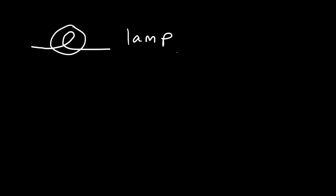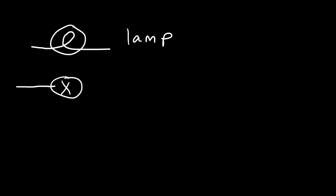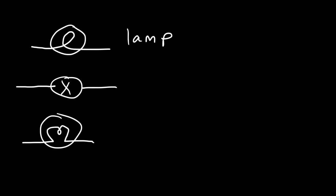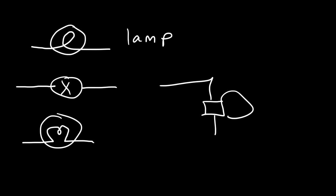Now let's talk about lamps and light bulbs. There are a lot of different ways to draw the symbol for a lamp or light bulb. One way is like this — that's a simple symbol for a light bulb. Another symbol looks like this — that's another symbol for a lamp. Or you could draw a light bulb the old-fashioned way with a circuit attached and show the light coming off.